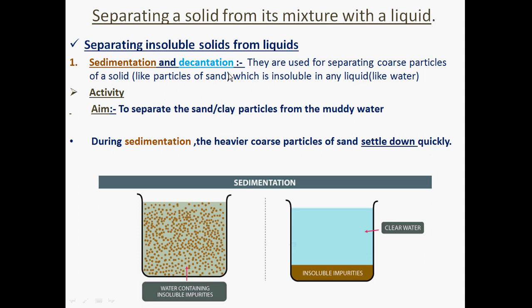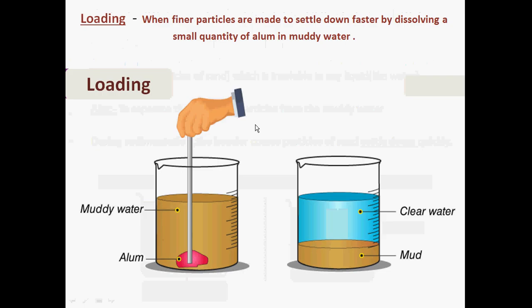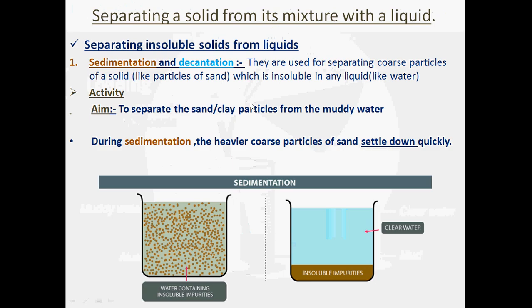Decantation can be seen when we cook rice and pulses. Before cooking, we clean the rice and pulses. As you can see in this figure, we are slowly pouring water from the top cautiously so that the pulses or rice do not come along with the water. This is the general case of decantation.